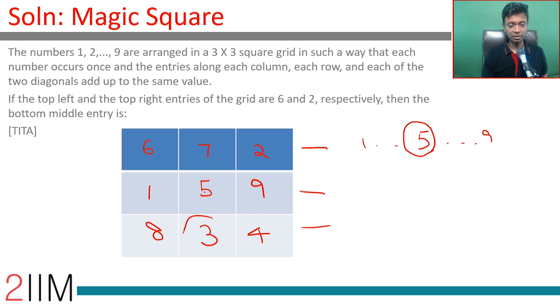The bottom middle entry is 3. The answer should be 3. Stick the middle number in the middle and then this kind of question becomes very simple. Find the total of everything put together, that is 45. So each row, each column should add up to 15, then work from there on.